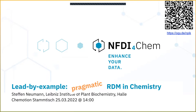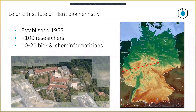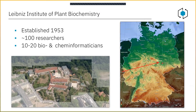Briefly, the IPB Leibniz Institute of Plant Biochemistry has been established many decades ago. We are situated in Halle/Saale, about an hour on the train from Berlin and very close to Leipzig. Depending on how you count, there are among the researchers about 10 to 20 bio- and cheminformaticians.